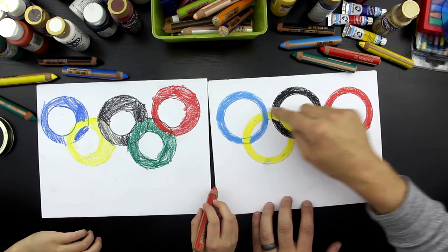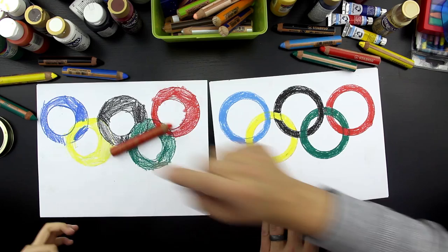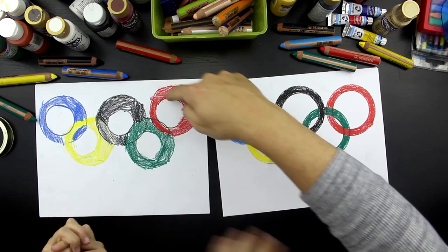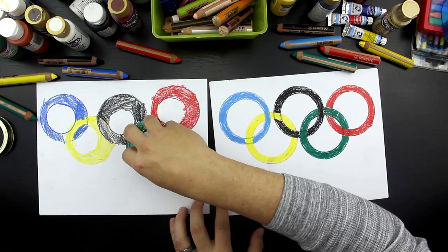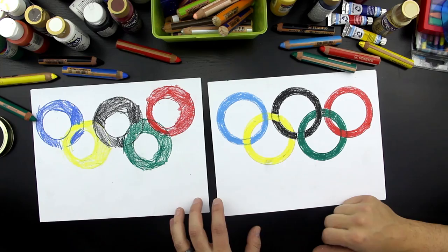And you use overlapping to make the rings look like they are connected. And you did it a little bit easier. And this might be a good version for the younger kids. Is to just do overlapping. So, the whole red ring is overlapping the whole green ring. The green is overlapping black. Black is overlapping yellow. And the yellow is overlapping blue.